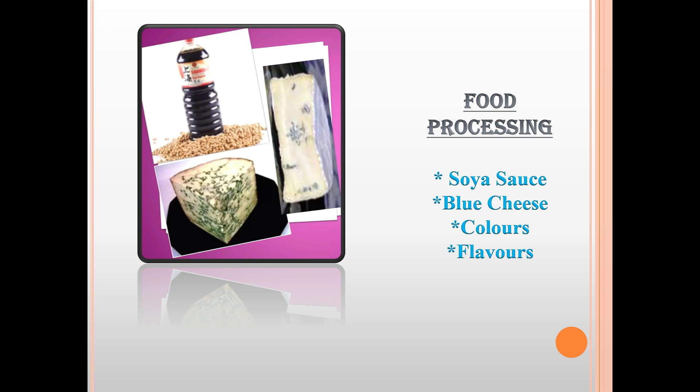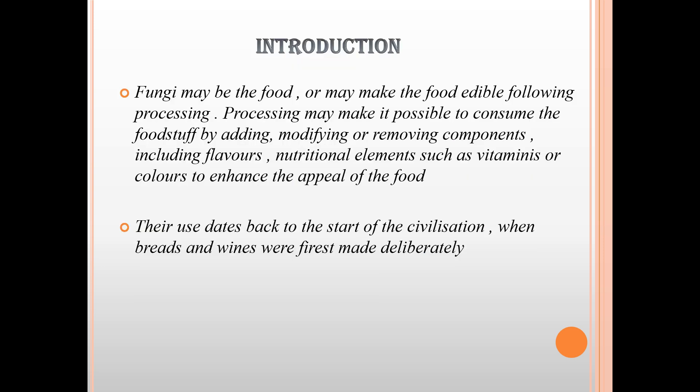In food processing, fungi may be the food itself or may make food edible following processing. Processing may make it possible to consume a foodstuff by adding, modifying, or removing components, including flavors, nutritional elements such as vitamins, or colors, to enhance the appeal of the food. Their use dates back to the start of civilization when breads and wines were first made deliberately.